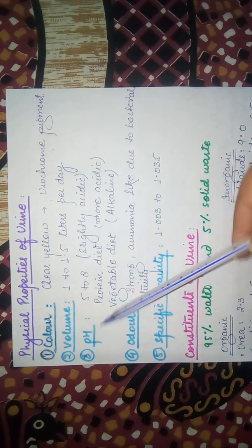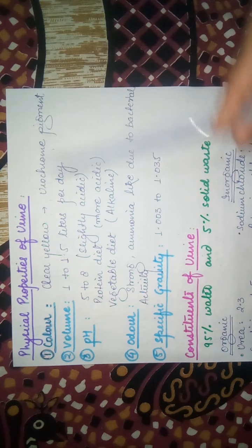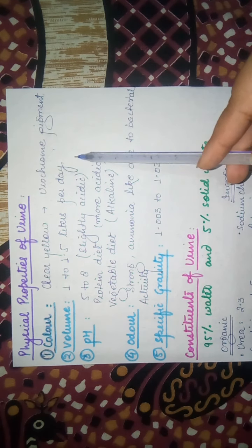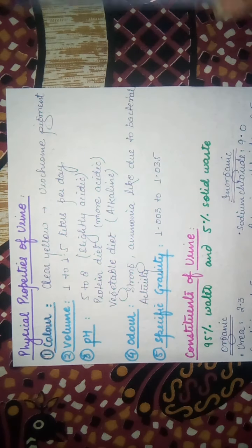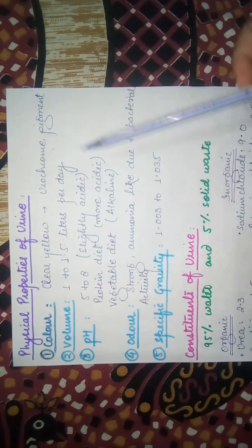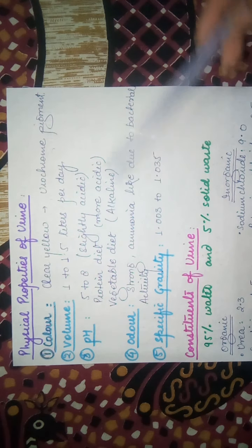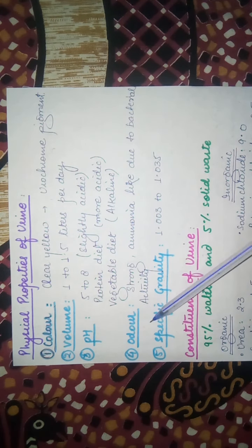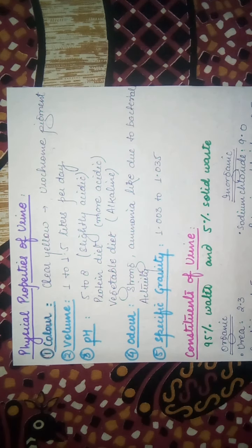The pH of urine ranges from 5 to 8 and it is slightly acidic. If the odor is strong, it is because of bacterial infections and bacterial activity, that is why it smells like ammonia if you observe it in a closed room.